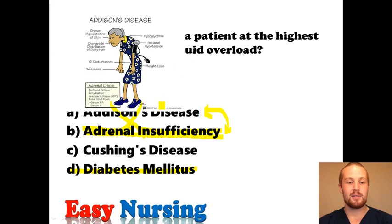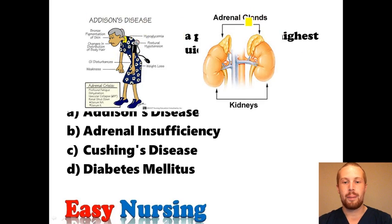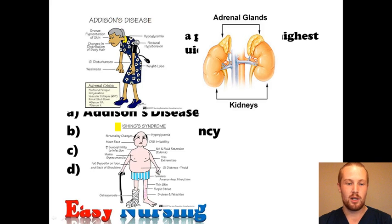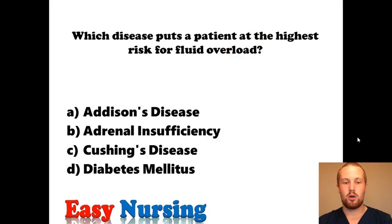To recap: Addison's disease is going to be low aldosterone, low cortisol — the stress hormone — so not enough adrenal gland hormones. Adrenal insufficiency and Addison's disease are the same disease. Cushing's syndrome — you're holding on to sodium and fluid because you have too much aldosterone, which puts the patient at risk of fluid overload. Diabetes mellitus involves checking blood sugars and is not associated with fluid overload on its own. So for this problem, the answer is Cushing's disease.